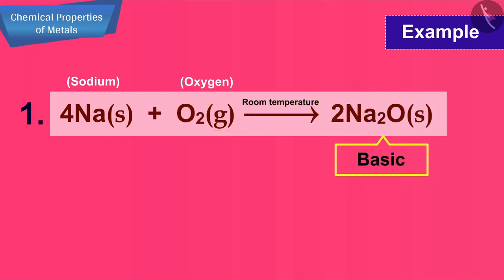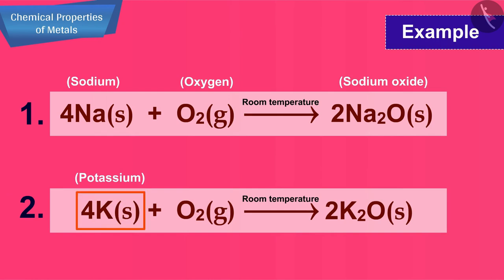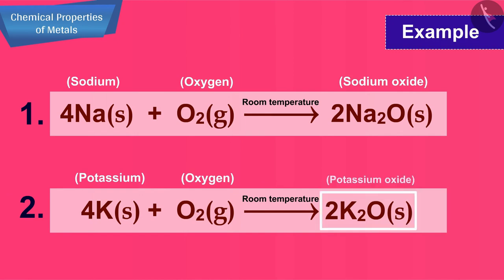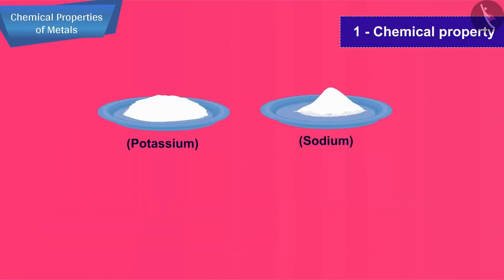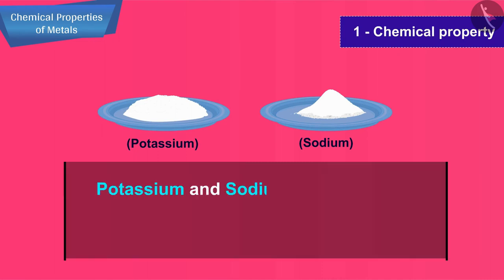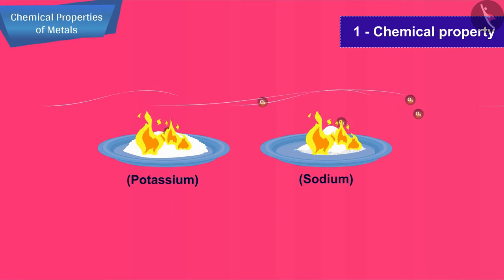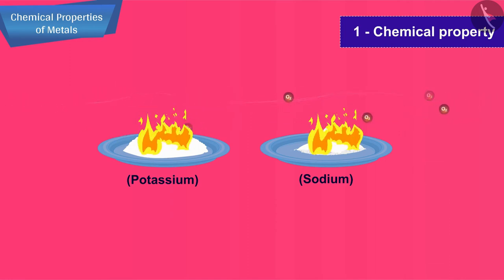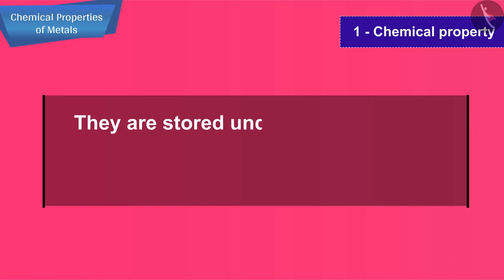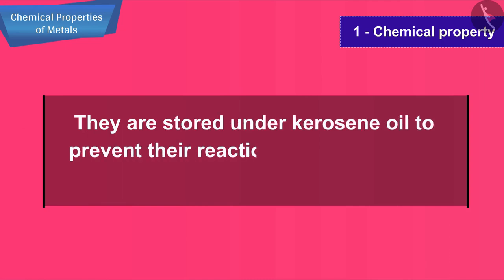For example, sodium metal reacts with oxygen of air at room temperature to form a basic oxide called sodium oxide. Potassium metal also reacts with oxygen of air at room temperature to form potassium oxide (K₂O). Potassium and sodium are so reactive that they catch fire and start burning when kept open in the air.